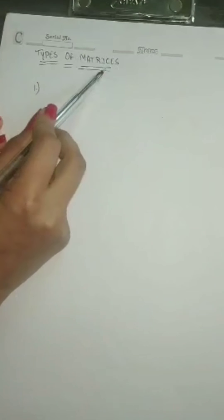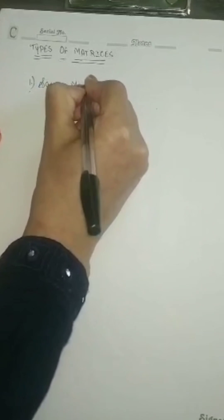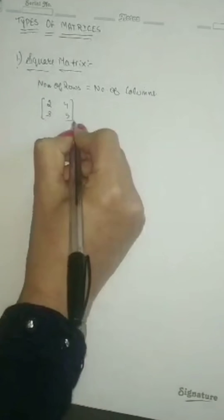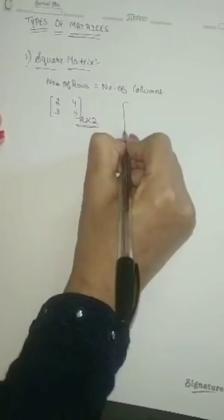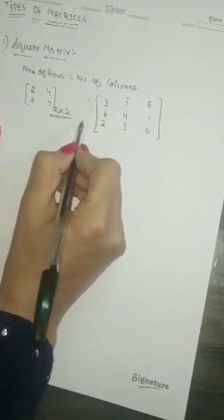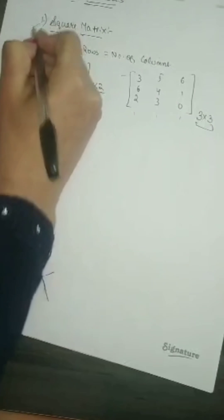Further we will discuss the types of matrices. The first type is square matrix. A square matrix means that the number of rows will be equal to number of columns. For example, we are having a matrix 2, 3, 4, 5 — it is having 2 rows and 2 columns. Or we are having a matrix 3, 6, 2, 5, 4, 3, 6, 1, 0 — this is a matrix with 3 rows and 3 columns. The order of the matrix is same, so it is called a square matrix.